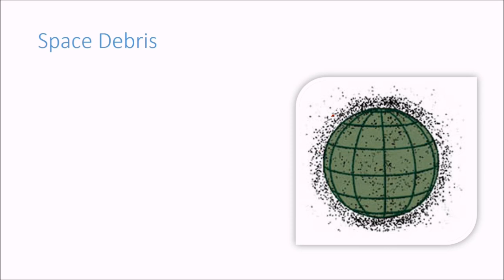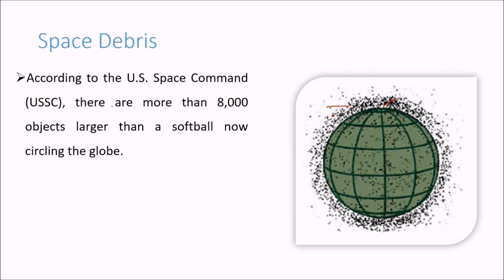Space debris. All these are satellites, this is the debris. Once the satellite is out of action, it will add to the debris. According to US Space Command, there are more than 8000 objects larger than a softball now circling the globe, and of these 2000 are satellites, whether they are working or not.